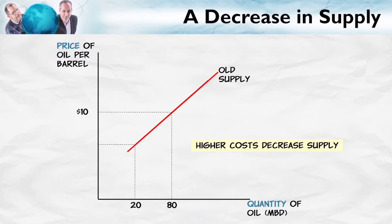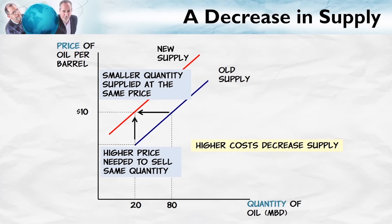Here's our old supply curve. Now we have increased rules and regulations which increase costs, or there's an increase in the price of some input — that reduces supply. Reductions in supply mean the supply curve moves up and to the left. A reduction in supply means that at any price, the firm is now willing to sell a smaller quantity. Or equivalently, for any particular quantity with higher costs, the firm needs a higher price. The minimum price that suppliers require to produce this quantity has increased. That's what a decrease in supply looks like — higher costs decrease supply.